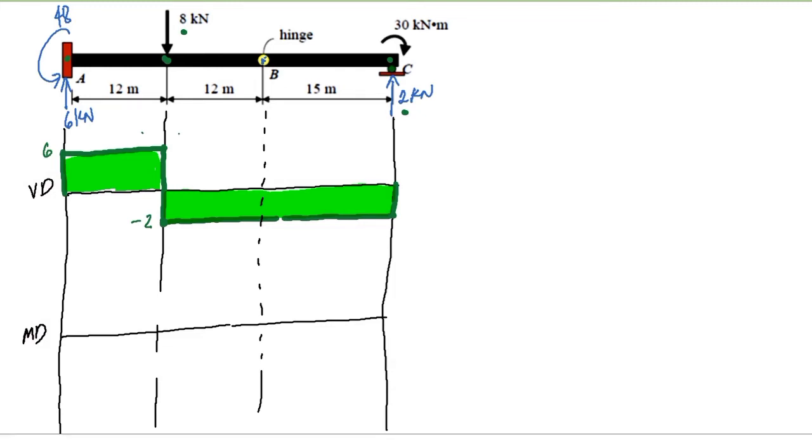Let's start with the moment. We have 48 kilonewton meter counterclockwise, which means it's negative. So we go down by 48 to negative 48. I didn't indicate the negative here because the counterclockwise direction automatically denotes it as negative moment.